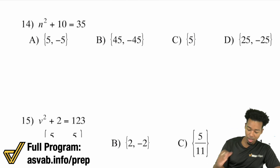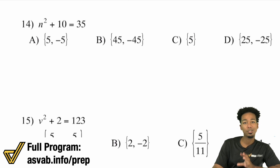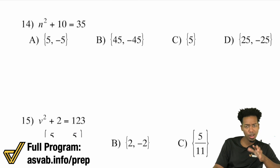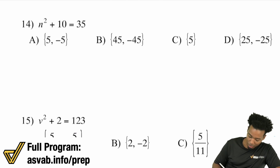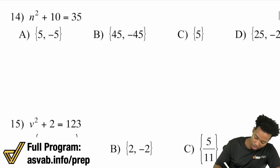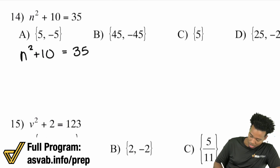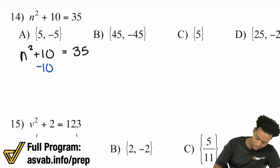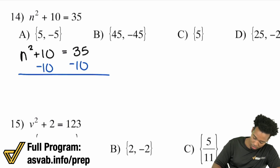Now let me show you tougher ones. Number 14: we have n squared plus 10 equals 35. Notice we don't have an n term — we have n squared but no regular n term — so we don't have to factor. I'm going to show you two ways to get the same answer. What I'll do is get the n squared term by itself, with the regular number on the other side. Subtract 10 on both sides and we get n squared equals 25.